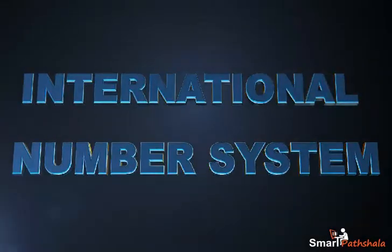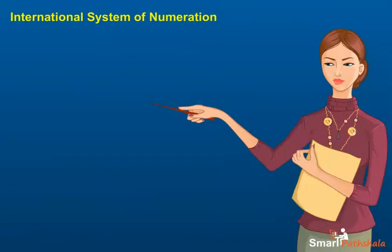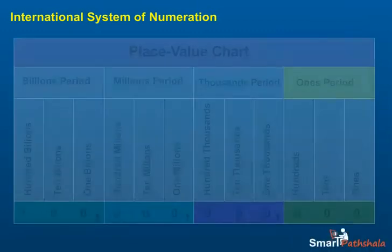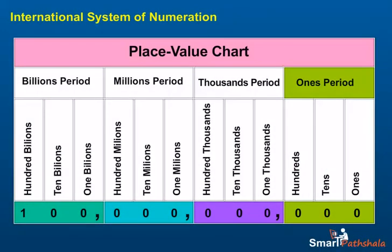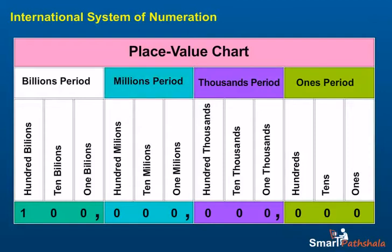This module will explain the basics of the international number system. Another system of numeration used worldwide is the international system of numeration. It has four periods: the ones period, thousands period, millions period, and billions period.